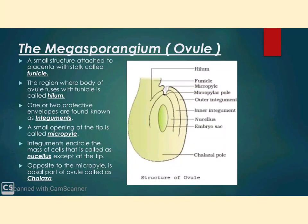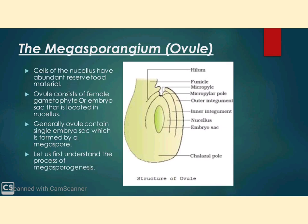Let us familiarize ourselves with the structure of a typical angiosperm ovule, that is the megasporangium. The ovule is a small structure attached to the placenta by means of a stalk called the funicle. The body of the ovule fuses with the funicle in the region called hilum, which represents the junction between the ovule and funicle. Each ovule has one or two protective envelopes known as integuments. Integuments encircle the mass of cells known as nucellus, except at the tip where a small opening is present known as micropyle. Opposite the micropyle end is the chalaza, representing the basal part of the ovule.